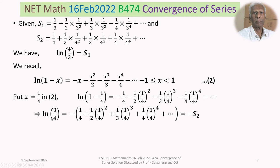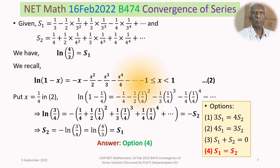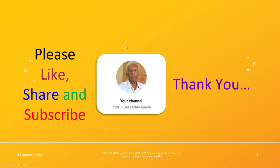So S2 equals minus ln(3/4), which equals ln(4/3), since minus ln(3/4) equals ln((3/4)⁻¹) equals ln(4/3). And ln(4/3) is precisely S1. Therefore S1 equals S2, which corresponds to option 4. This is a straightforward question. I hope you have understood the solution — go on working out more problems on the convergence of series. I wish you all the best. Thank you.